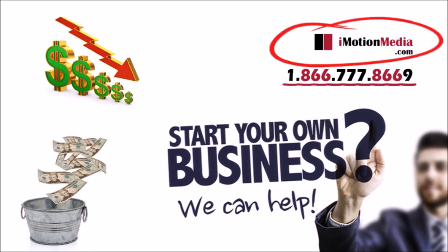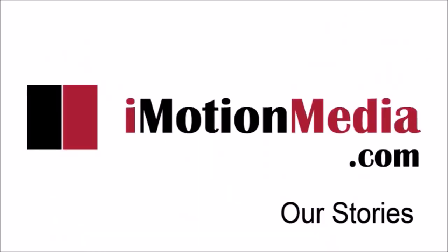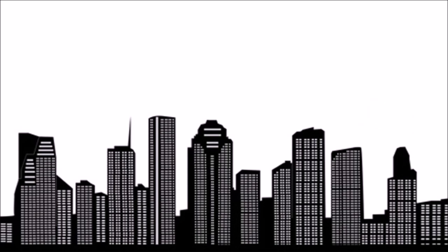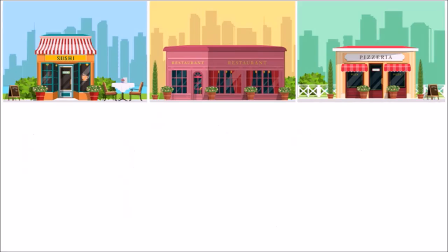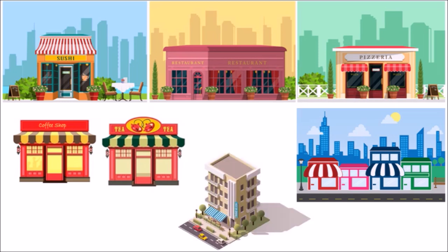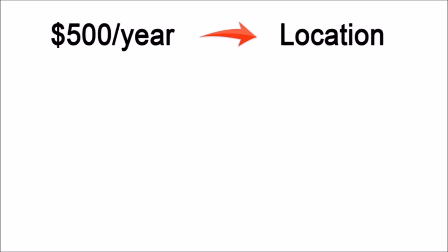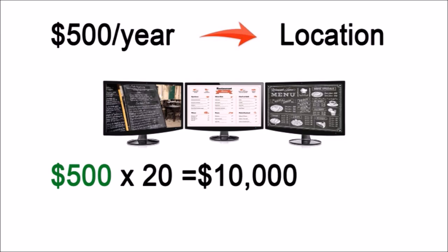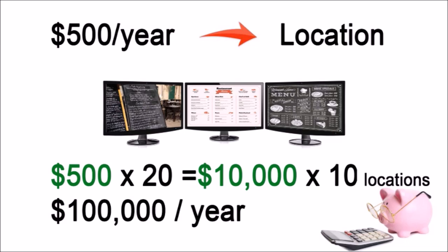Get started and take advantage of our 10-screen network package. Here are some examples of how our clients are monetizing using our digital signage services. Sam lives in a big city. He installed flat screen monitors in 10 popular locations — 3 restaurants, 2 coffee shops, 2 hair salons, 2 convenience stores, and a supermarket. He only charges $500 a year per location including content design and puts 20 ads per location, making $10,000 per screen. Multiplied by 10 locations, Sam makes $100,000 per year.